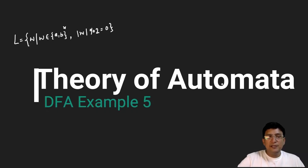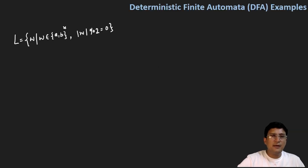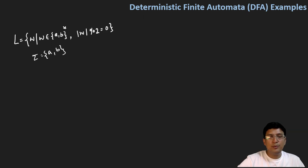Hello everyone, we'll see some more examples related to the DFA. For example, the language is given as W, where the alphabet set is {A, B}, and it is said that the length of the string mod two should be equal to zero. This means we should first draw the language set.